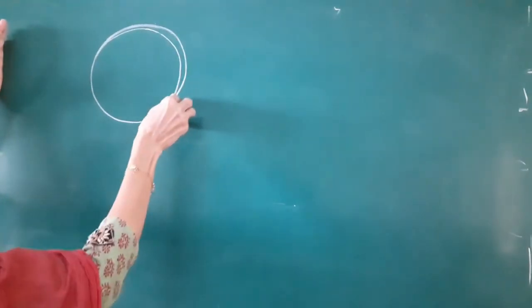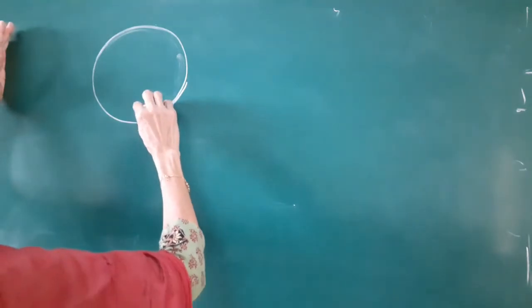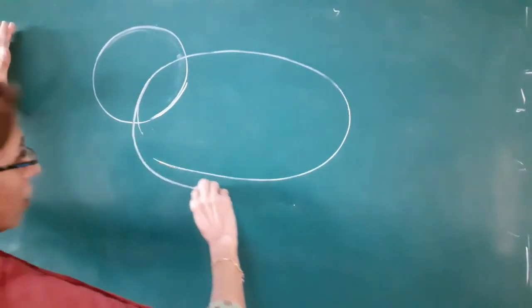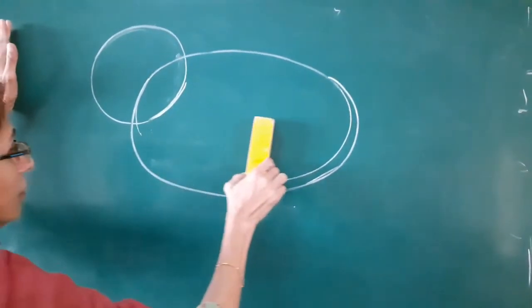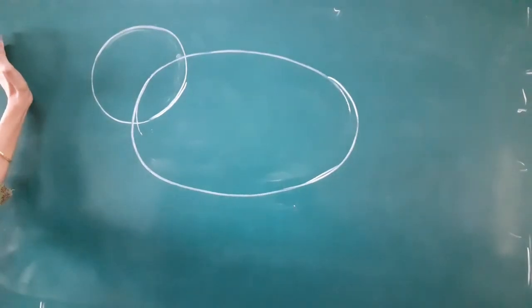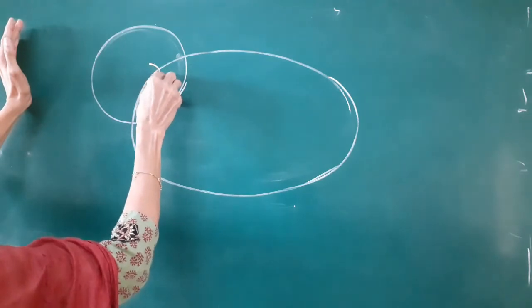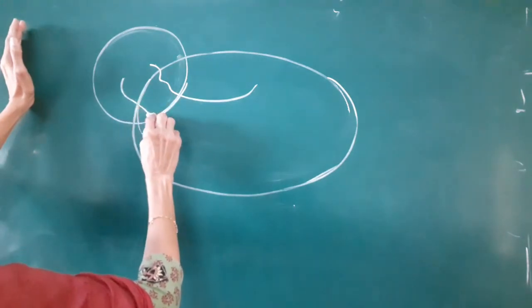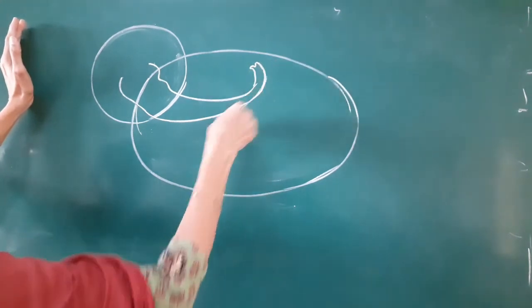And you will make an oval by overlapping this way. Now from here, and this is the trunk.